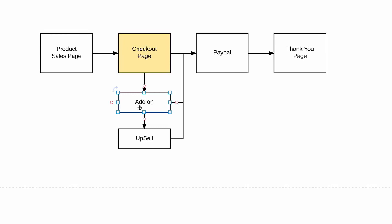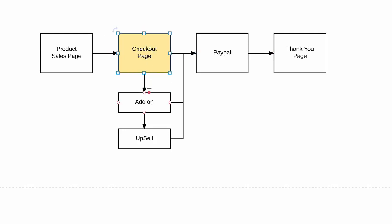You can also have an add-on — for example, a PDF for $9.99 with a checkbox people can check to add it to their initial order. Or you can create an upsell: after they purchase the main product, you offer them another product, like a one-on-one call for another $100 or $200, however much you decide to charge. Once the checkout page, add-on, and upsell are all set up, everything is connected to PayPal. After payment is processed, customers land on the thank you page with information on how to access what they purchased.